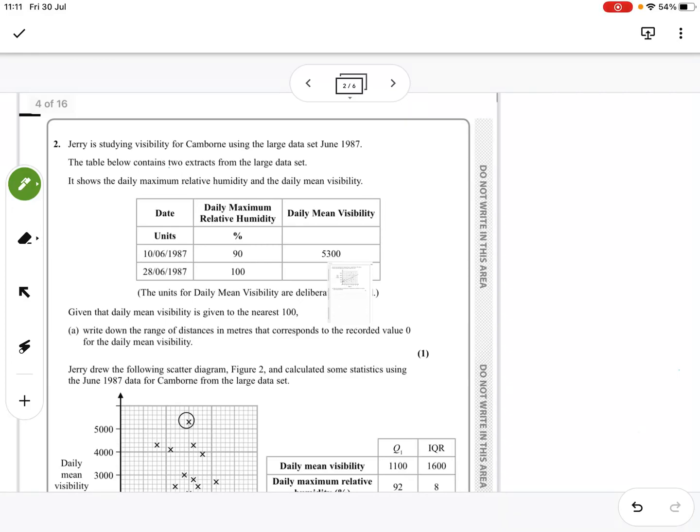Hi, this is AS Maths October 2020 Paper 2 Question 2, so we're still in the statistics part. Gerry is studying visibility for Camborn using the large data set, so I'm very sorry, this is the large data set question.